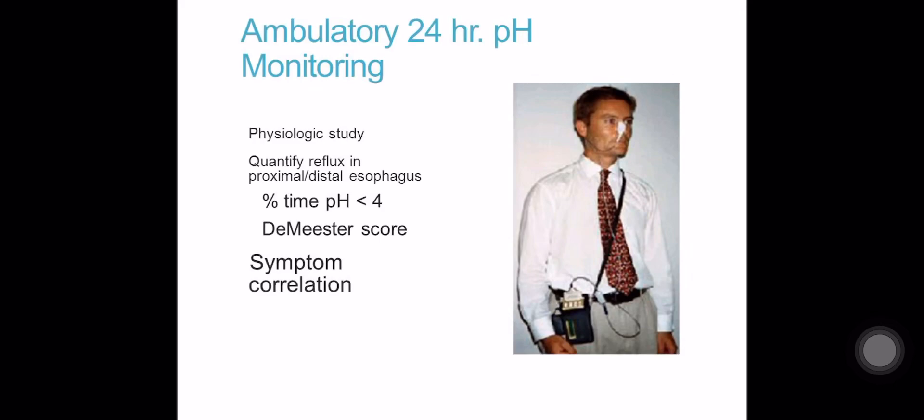This is how 24-hour pH monitoring is done. You have to set the percentage time of pH less than 4 in the distal esophagus.